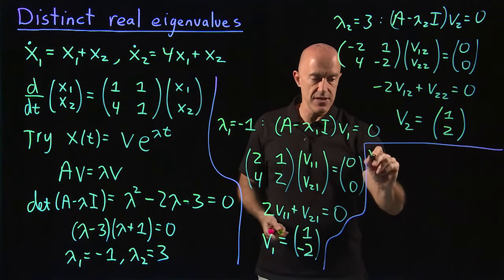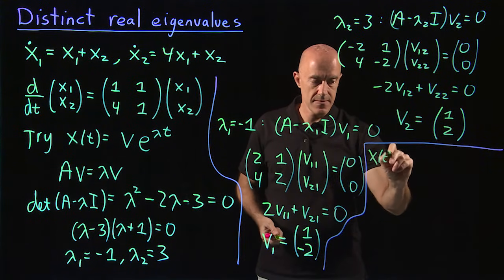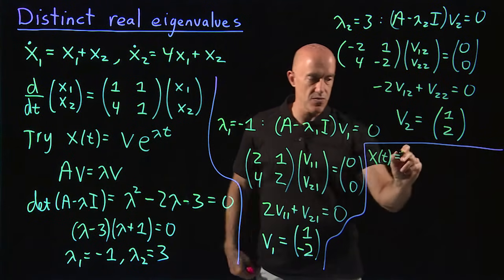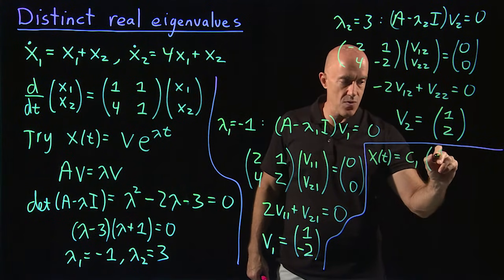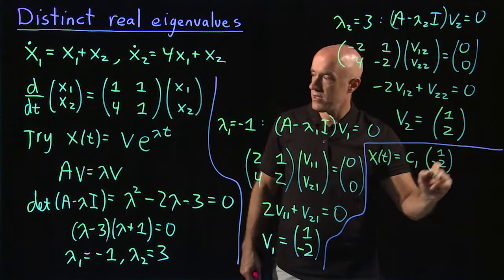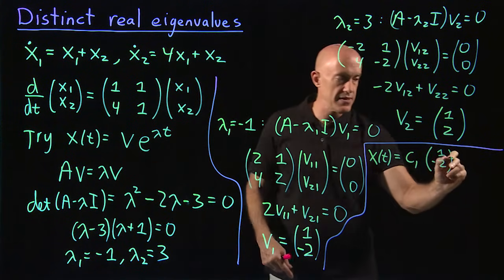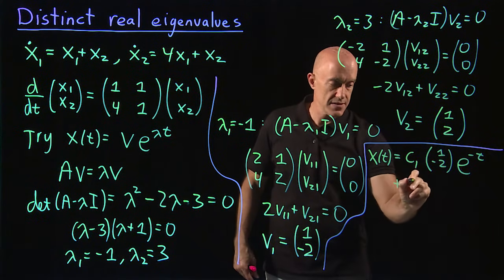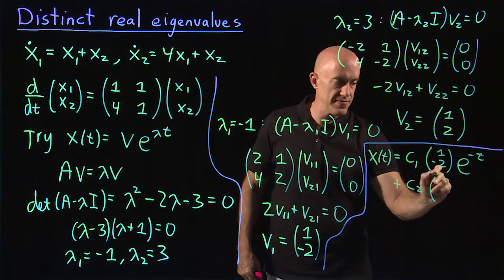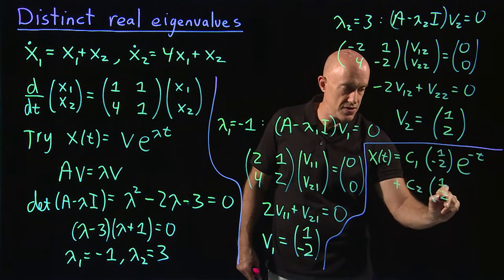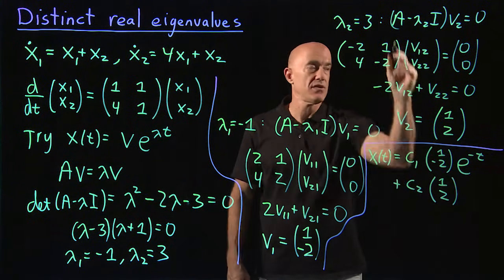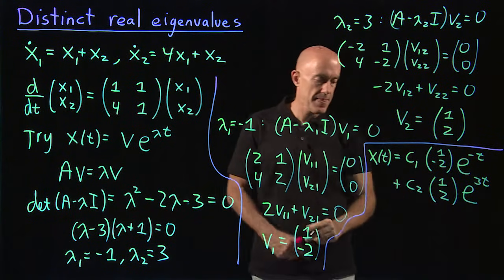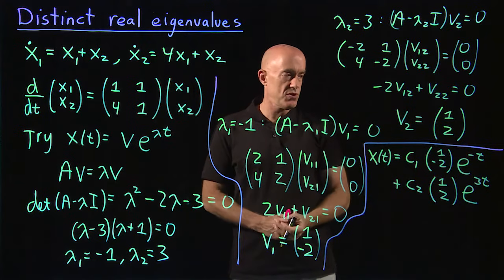So we can write x(t) is equal to a constant times v₁. So c₁ times (1, -2) times e to the minus t, plus c₂, a second constant, times v₂, which is (1, 2), times e to the 3t. And that becomes our general solution.